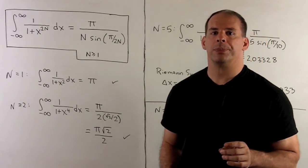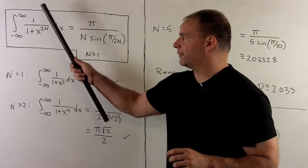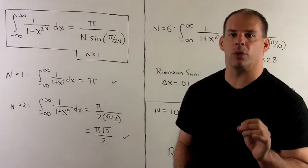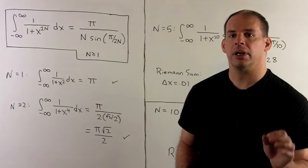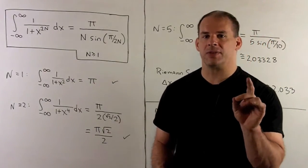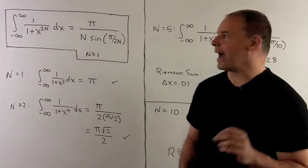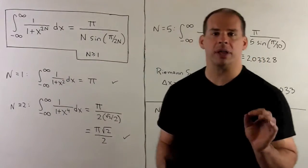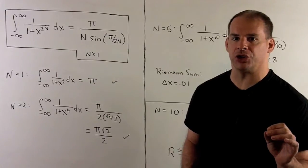In a previous video, we computed the improper integral from minus infinity to infinity of 1 over 1 plus x to the 4th power. If you feel comfortable with how that worked, in this video we do the same improper integral, except now it's going to be 1 over 1 plus x to the 2n power, where n is a positive integer.